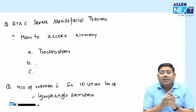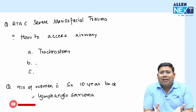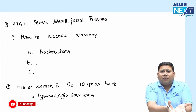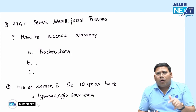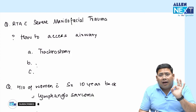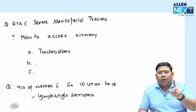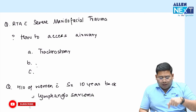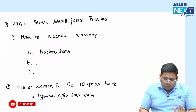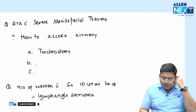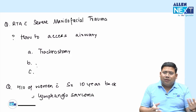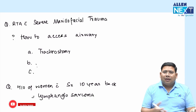RTA with severe maxillofacial trauma — next step to establish airway: either cricothyrotomy or tracheostomy. I don't know what the exact options were.